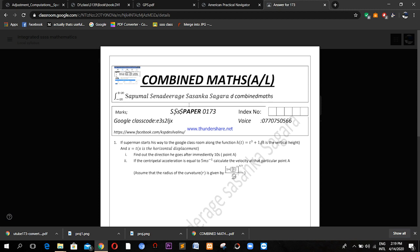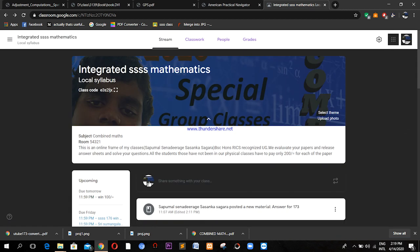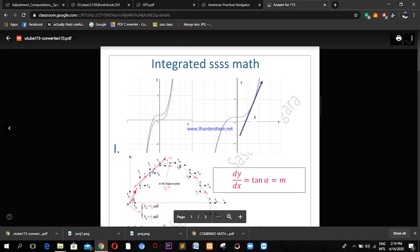Both of them have been measured in meters and time has been measured in seconds. At first they have asked: find out the direction he goes out immediately after 10 seconds. Let's see how to solve it.